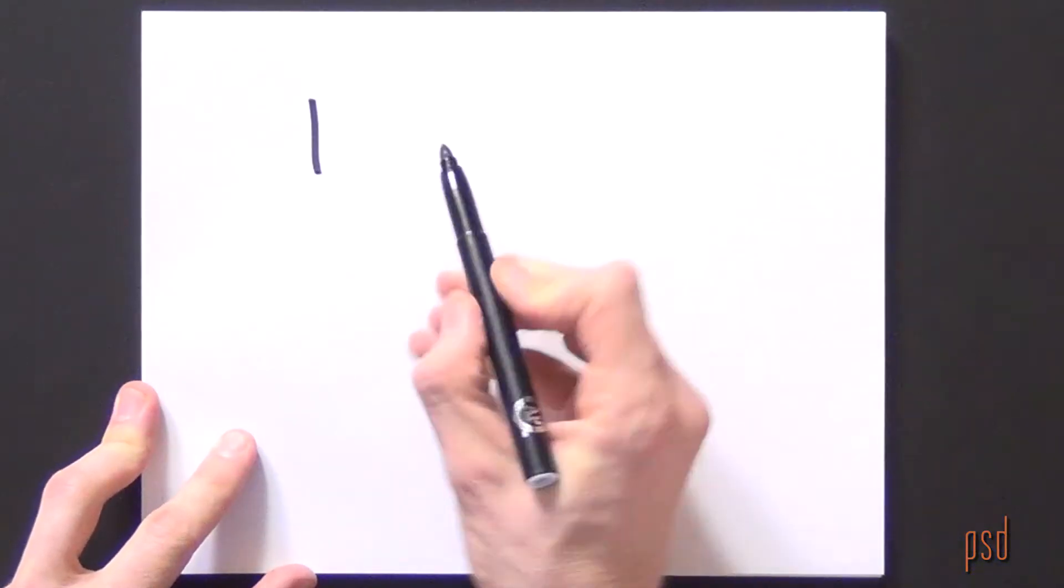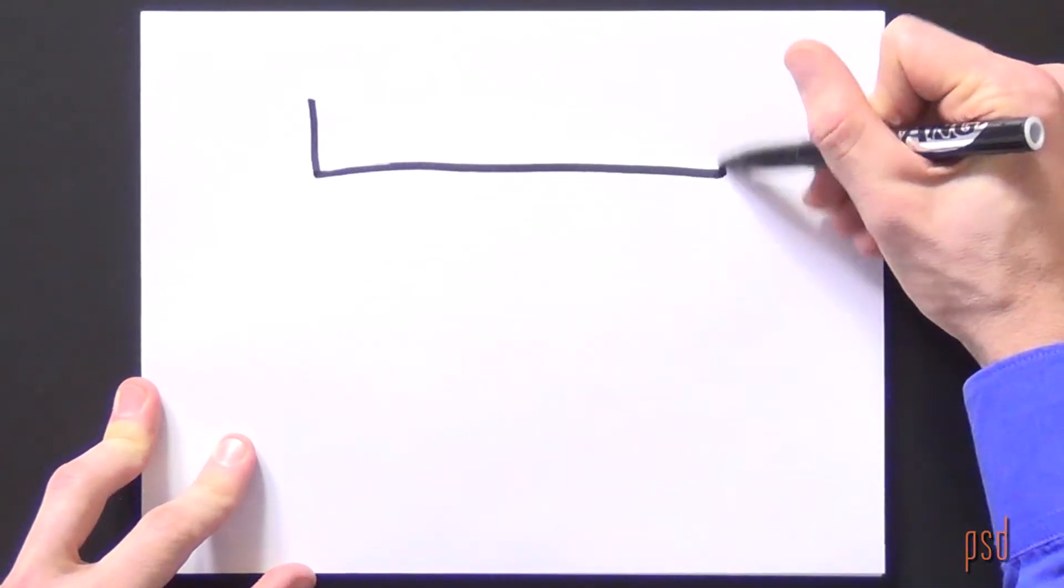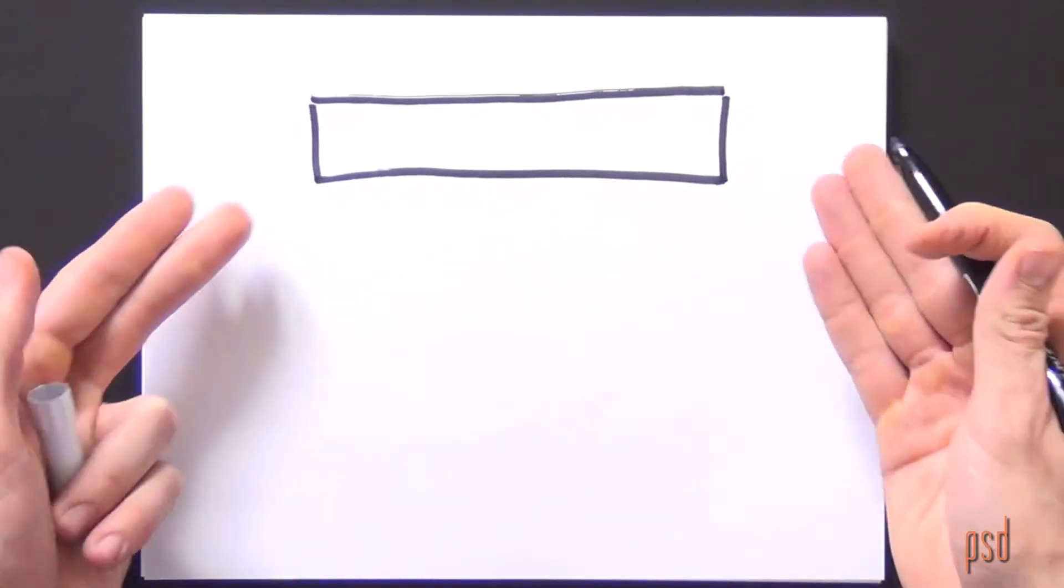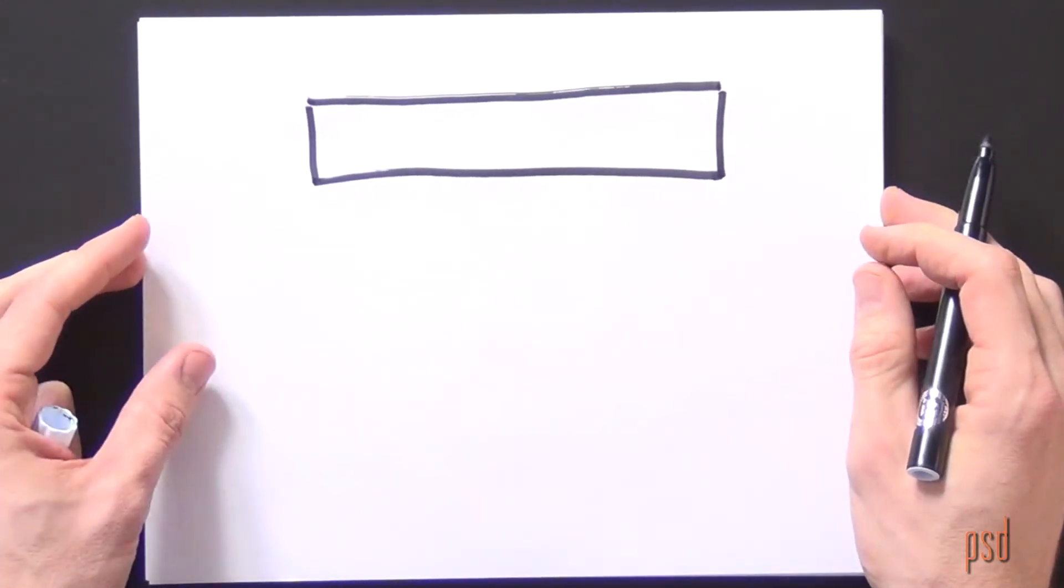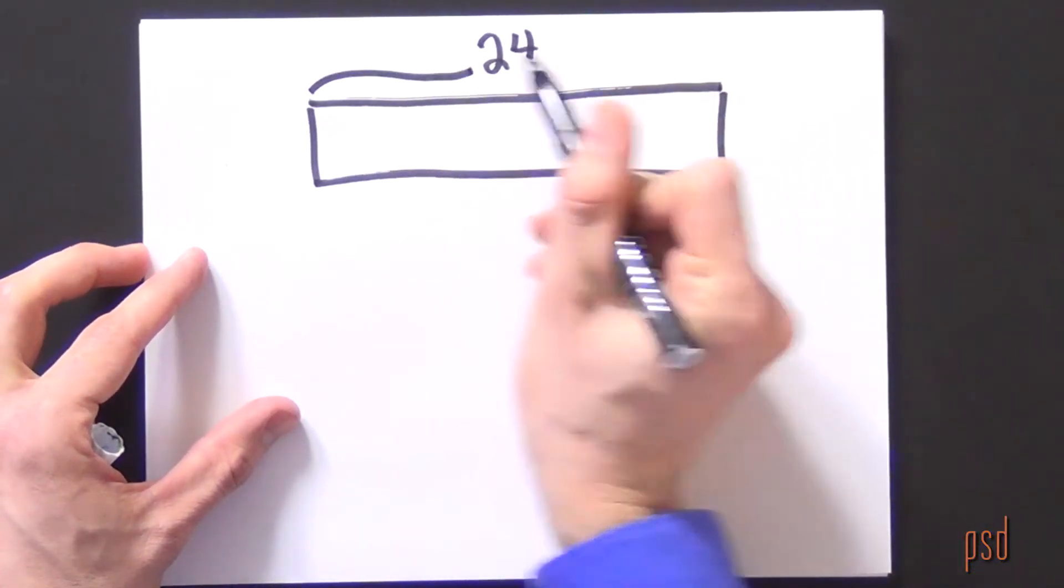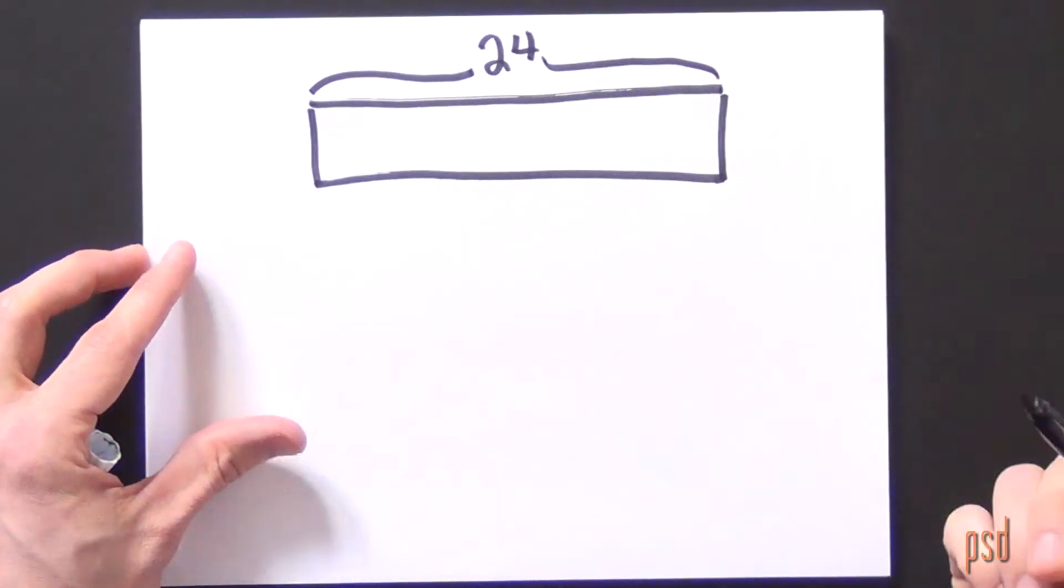First I'm going to represent what the garden is. I can do this using a rectangle or a strip diagram model. Here I see the garden and I know that there are 24 plants growing in it. So I'll label that here. Maybe indicate that there's 24 plants in all.